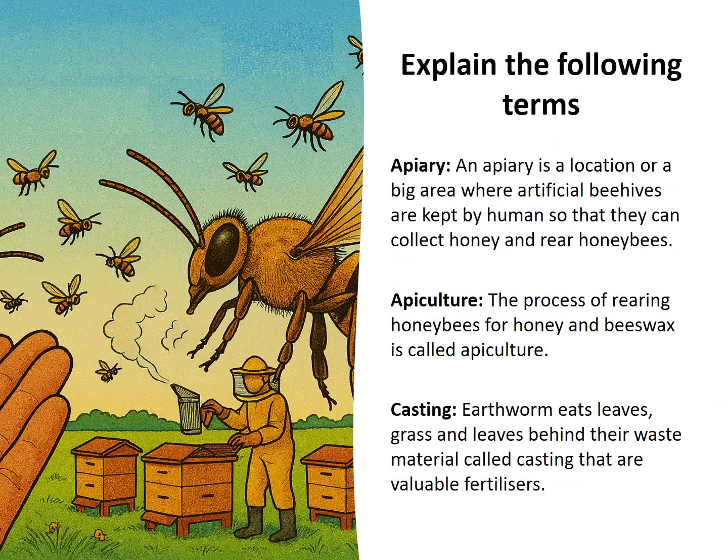Apiary: an apiary is a location or a big area where artificial beehives are kept by humans so that they can collect honey and rear honeybees. Apiculture: the process of rearing honeybees for honey and beeswax is called apiculture.